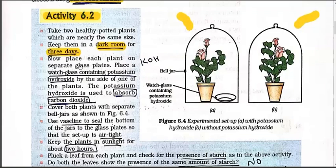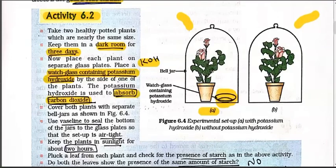Now place each plant on a separate glass plate. Place a watch glass containing potassium hydroxide - very important - by the side of one of the plants, not both. We placed it in the A setup. Potassium hydroxide is used to absorb carbon dioxide. So whatever carbon dioxide was going to go into that potted plant will not go in, because we placed potassium hydroxide outside it. So whatever carbon dioxide there is, instead of going into this plant, it will be absorbed by this KOH.